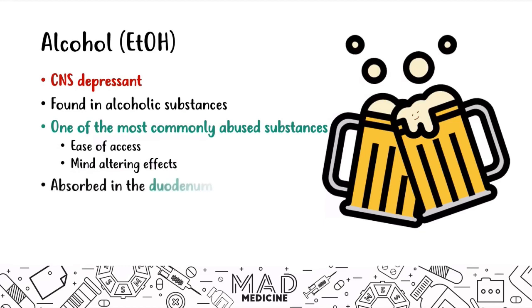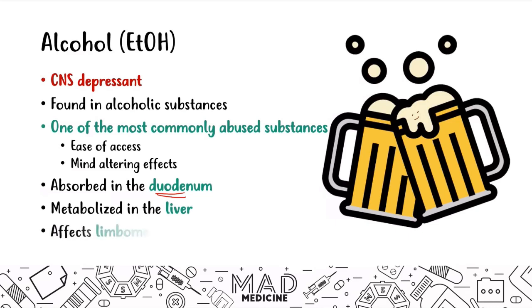Alcohol is absorbed in the duodenum and metabolized in the liver. We're going to talk about its toxic effects on the liver in a bit. It also affects the limbic-mesocortical dopaminergic pathway — how much of that will come up on Step 1, we have no idea, but it's something you now know.